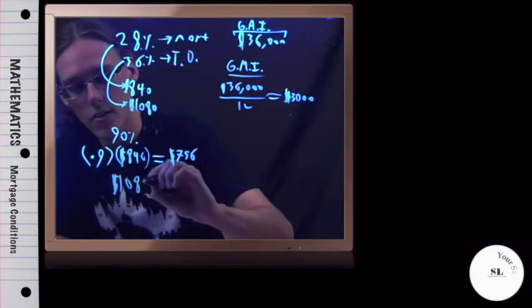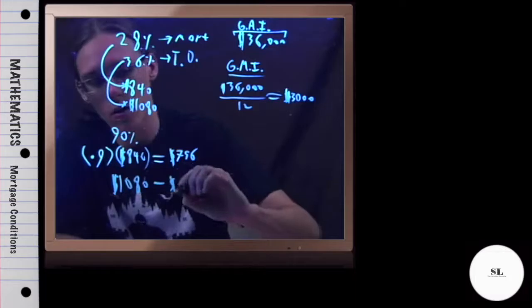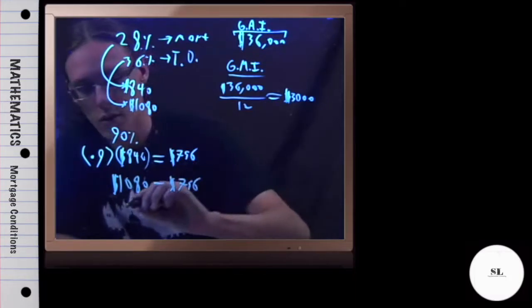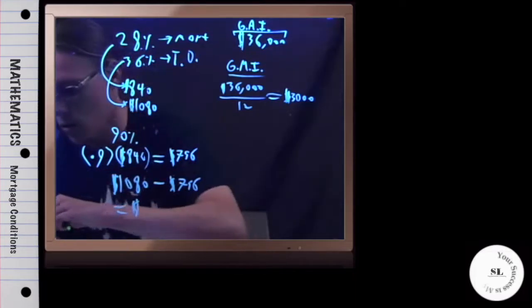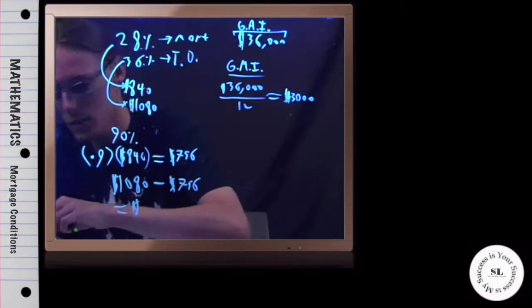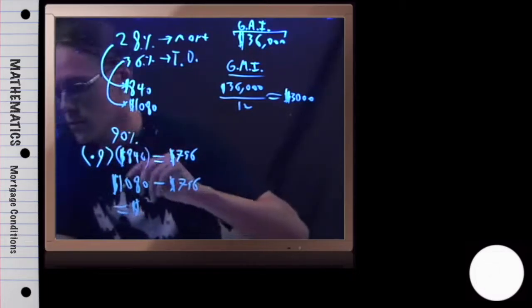Well, the maximum possible payment was $840, so we need to see what 90% of that is. Again, remember whenever you use a percentage number in an equation, it needs to be a decimal number.